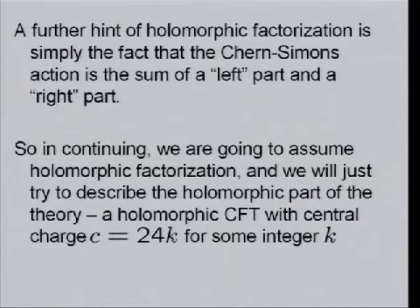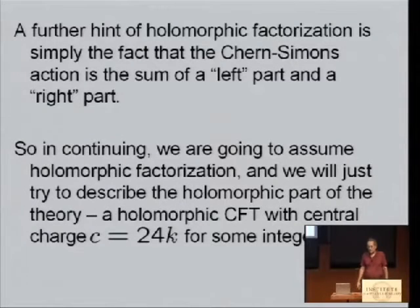So in continuing, we're going to assume holomorphic factorization, that is, we'll assume that there's a theory of left-moving waves and a separate theory of right-moving waves that don't interact with each other, and we'll just try to describe one of them. That's a drastic simplification because we're now in one dimension instead of two. Or in Euclidean space, because our functions will now be holomorphic. So we're just trying to describe the holomorphic part of the theory, a holomorphic conformal field theory, with central charge 24K for some integer K.